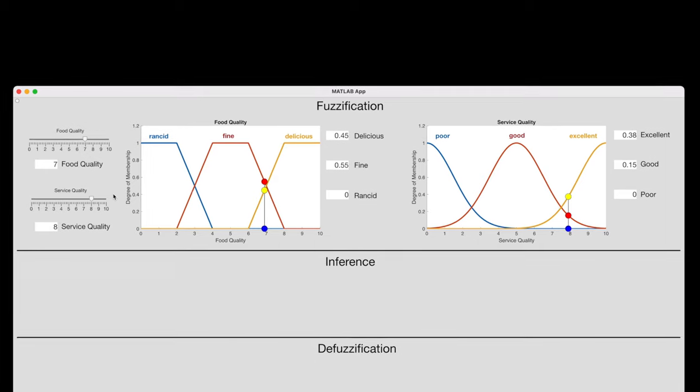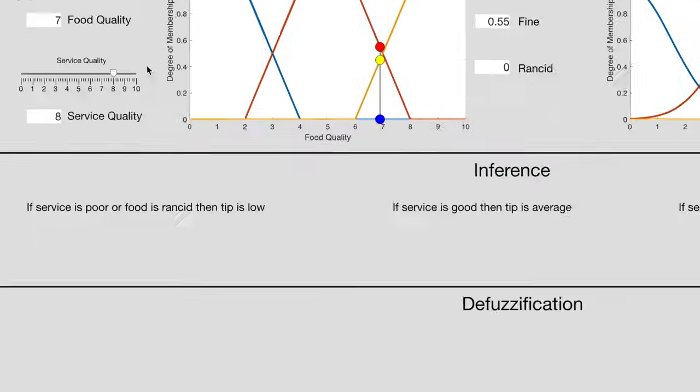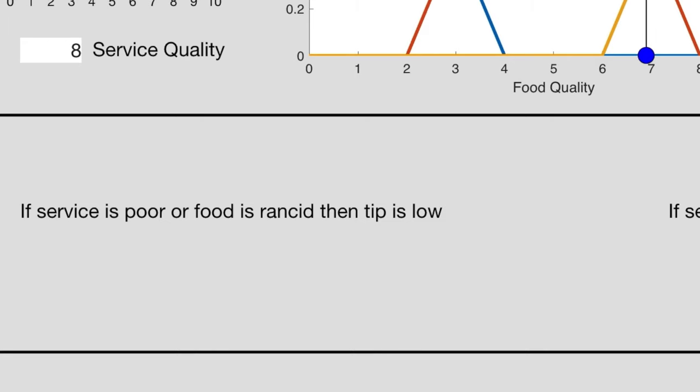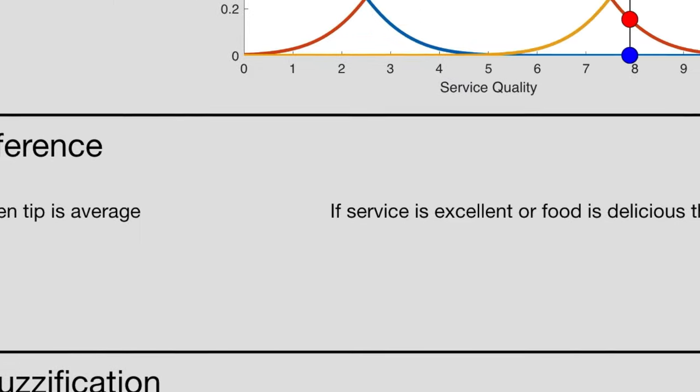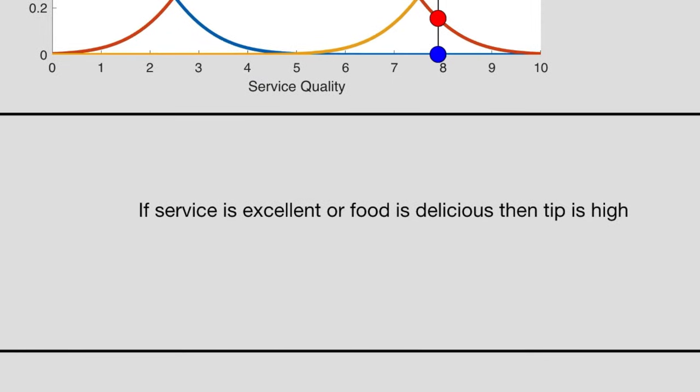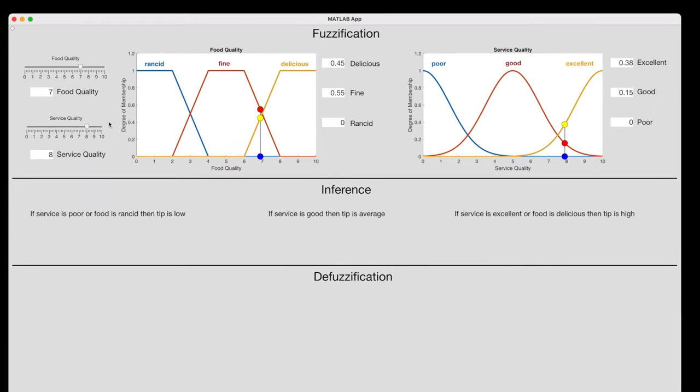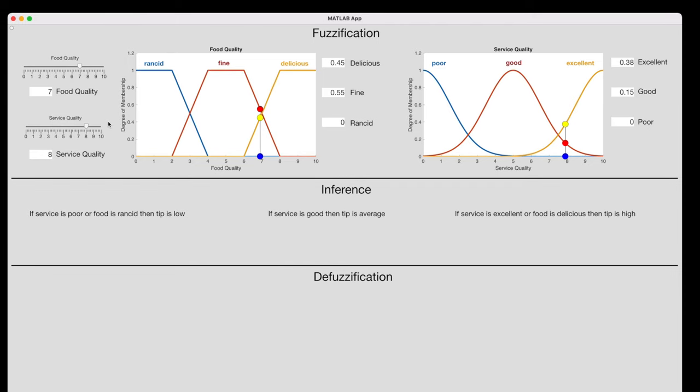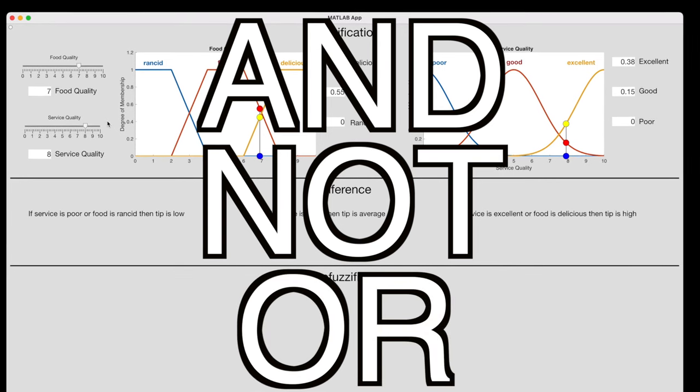With these two fuzzified variables, we can move on to inference, or using logical statements to infer what the output should be. In this case, we have three logical statements. If service is poor or food is rancid, then tip is low. If service is good, then tip is average. And if service is excellent or food is delicious, then tip is high. And these logical statements are similar to what we did in the last video, but with one major difference. We now have to deal with logical operators, like AND, NOT, and in this case, OR. So let's talk about fuzzy logic operators.